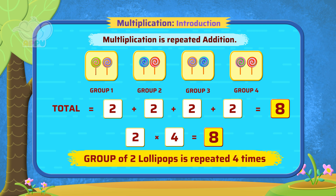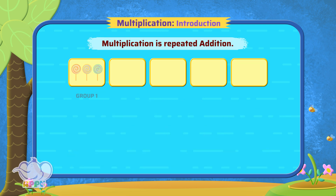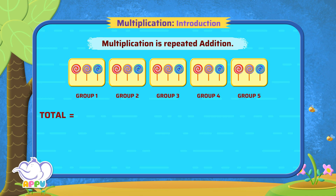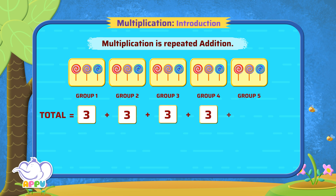Here's one more example. We see three lollipops, each in five groups. So how do we find the total number of lollipops? We add three five times: three plus three plus three plus three plus three, which equals fifteen. Or we use multiplication.